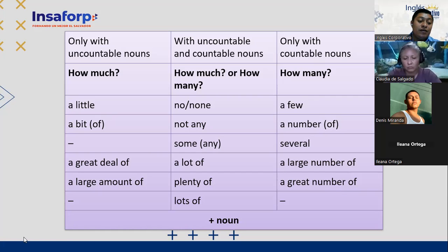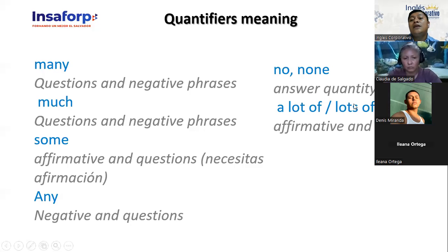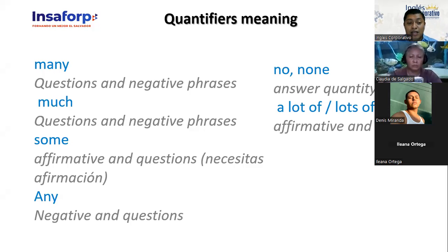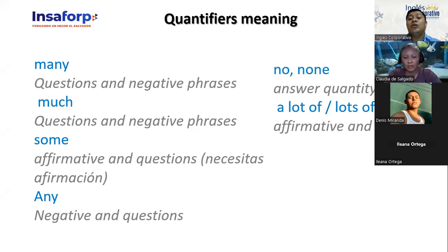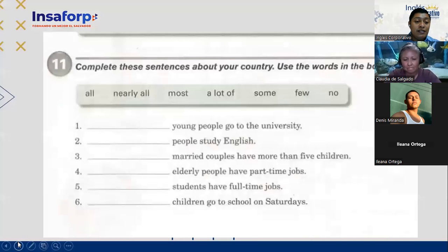Let's see some examples here. Here is the meaning of each of these quantifiers and how we are going to use them. Many — remember, we use 'many' in questions and negative sentences. Much — for questions and also for negative sentences. Some — we use 'some' in affirmative sentences and questions. Any — for negative sentences and questions as well. None — to answer about quantity, to say nothing. A lot and lots of — for affirmative and negative sentences.